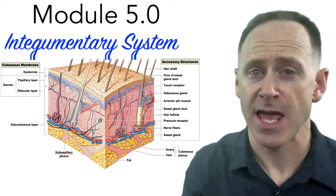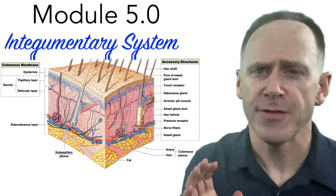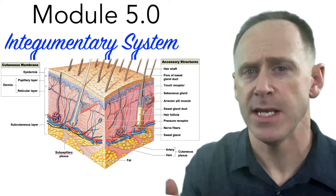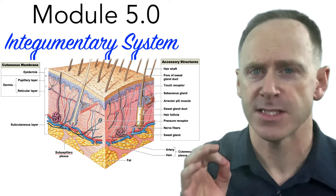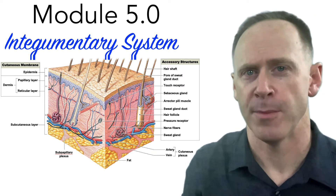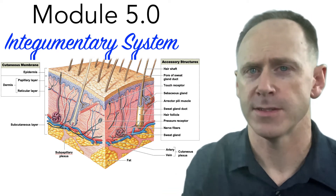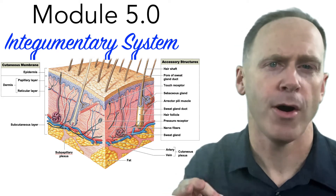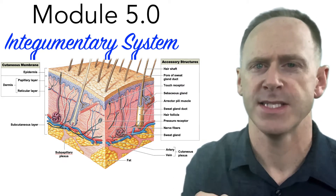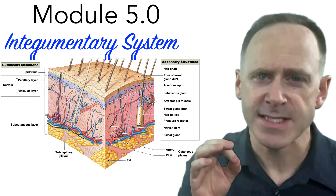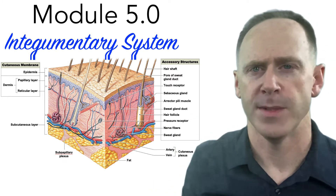Beneath the dermis is a layer of loose connective tissue, primarily adipose tissue, called the hypodermis because it lies beneath the dermis. It is also known as a subcutaneous membrane, again because it's below a cutaneous membrane. Thus, it separates the integument from deeper tissues and organs. It is typically not part of the integumentary system, but we include it here because of its immediate proximity to the skin and because its connective tissue fibers are interwoven with those of the dermis.